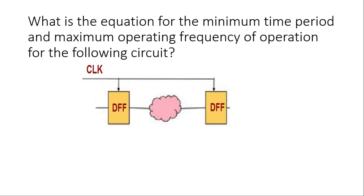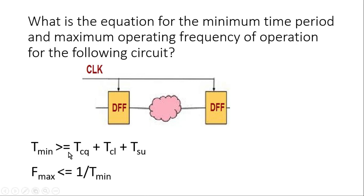The next question is: what is the equation for minimum time period and maximum operating frequency for the following circuit? The answer is T_minimum will be greater than or equal to T_cq of the first flop, plus combinational logic path delay, plus setup time of the receiving flop. And the maximum frequency of operation will be less than or equal to 1 divided by T_minimum.